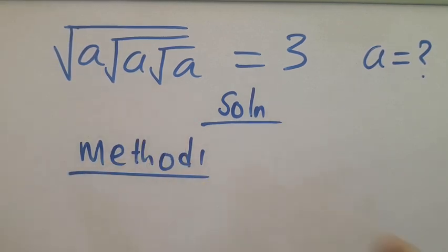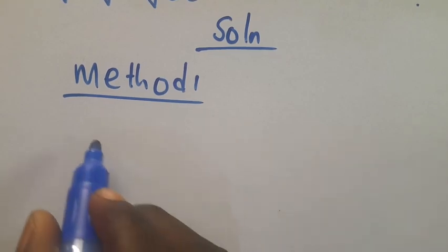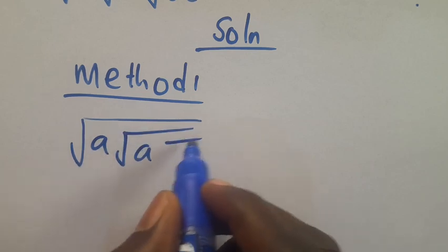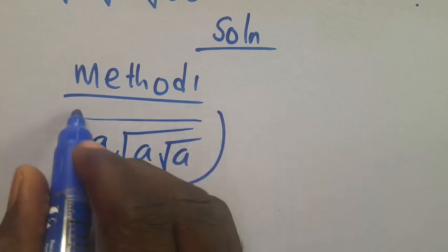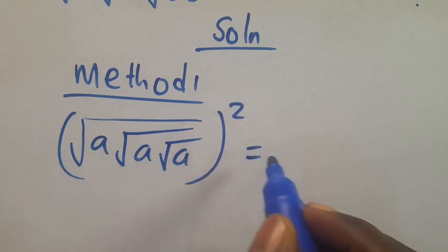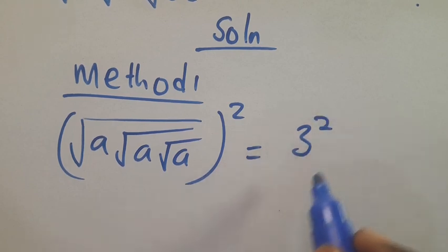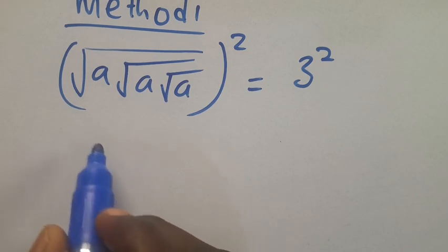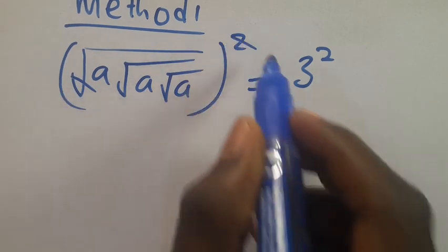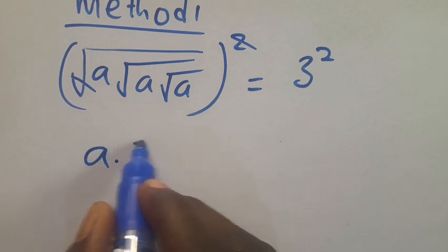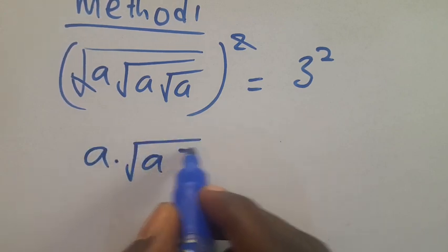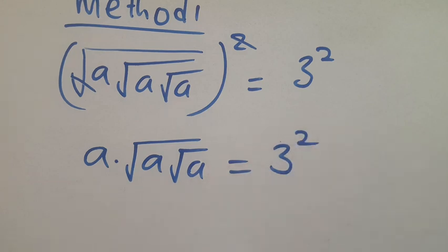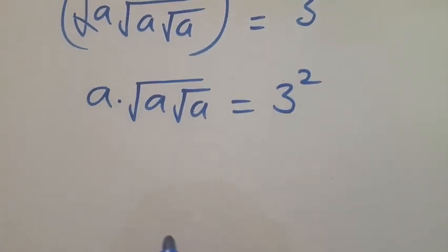To apply Method 1, let's square both sides. We put them in parentheses and take it to the power of two. We cancel terms so we have a multiplied by root of root of a into root of a, equals the right side taken to the power of two.